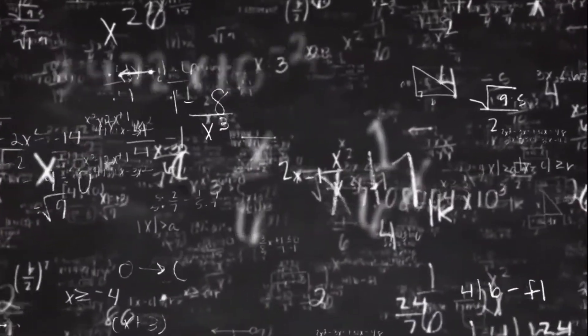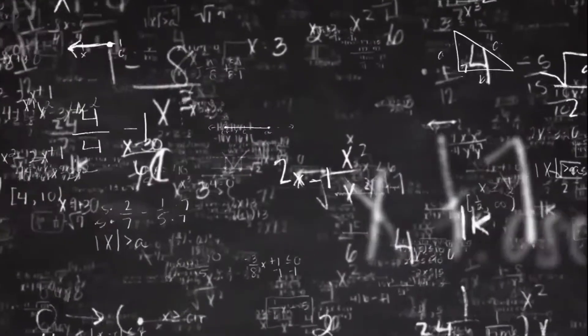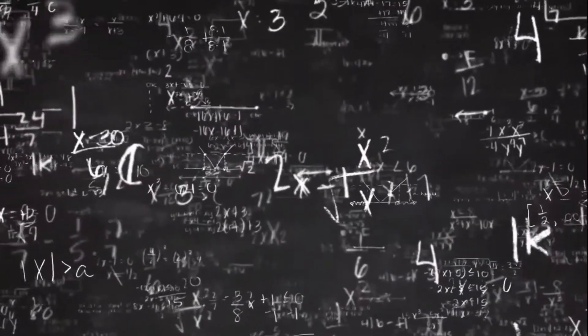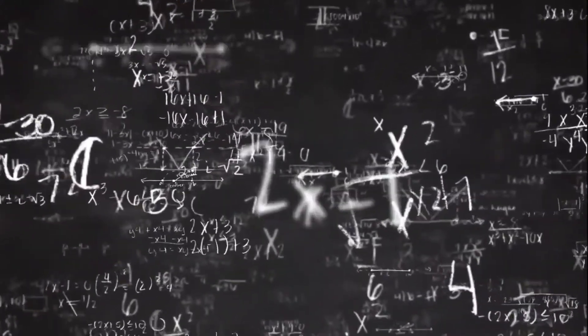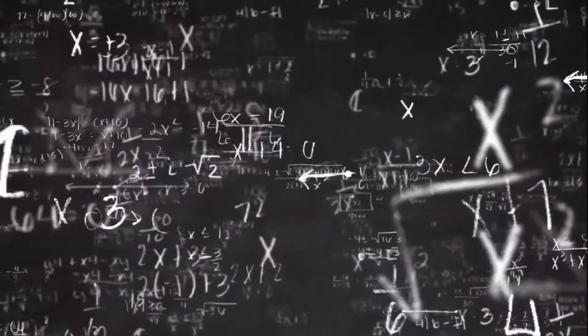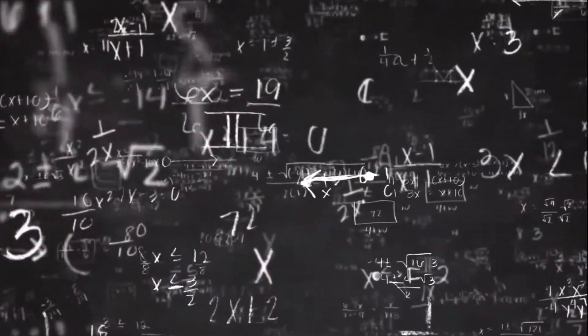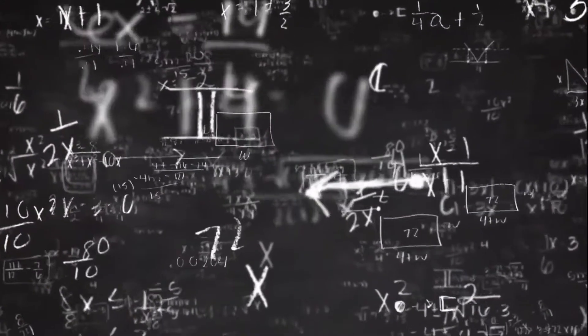The diameter is denoted by the letter D. There are infinite points on the circumference of a circle. This means that a circle has an infinite number of diameters, and each diameter of the circle is of equal length.